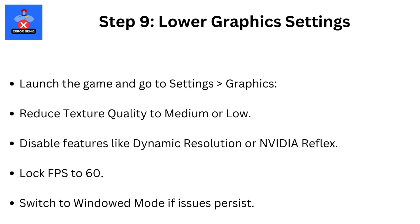Step 9: Lower Graphics Settings. Launch the game and go to Settings, then Graphics. Reduce Texture Quality to Medium or Low. Disable features like Dynamic Resolution or NVIDIA Reflex. Lock FPS to 60. Switch to Windowed Mode if issues persist.